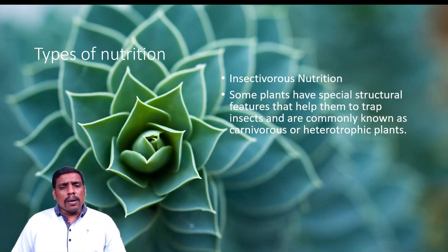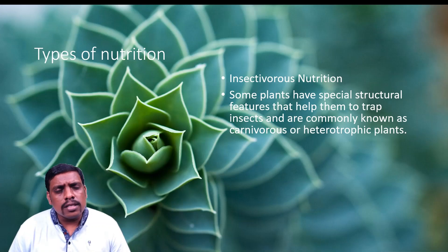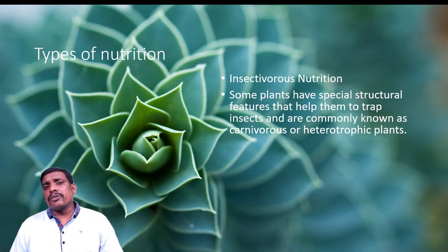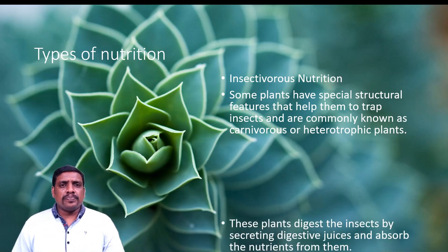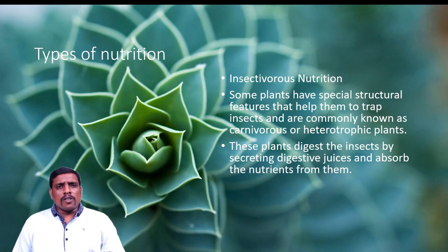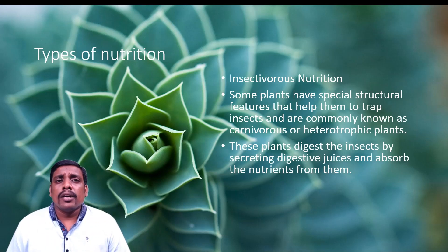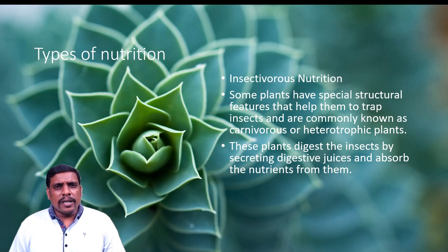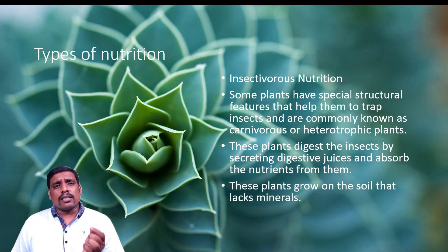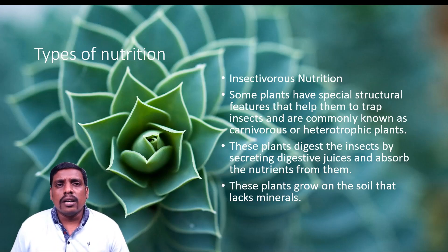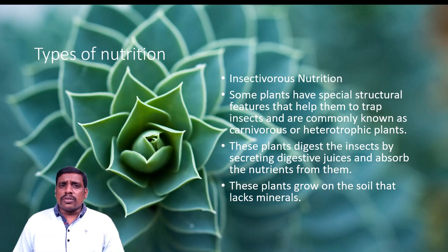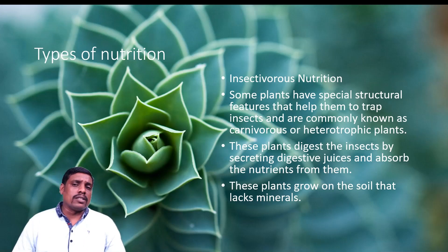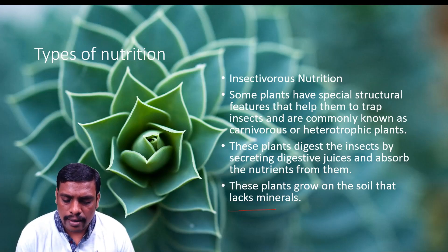Insectivorous nutrition: some plants have special structural features that help them trap insects. These special plants have modified devices made from plant parts like leaves and other branches. These traps help in capturing insects to fulfill their nitrogen requirement. The plants can digest the insect directly through enzymatic reactions using digestive juices, and then absorb the resulting nutrients. These plants typically grow on soil that lacks minerals.